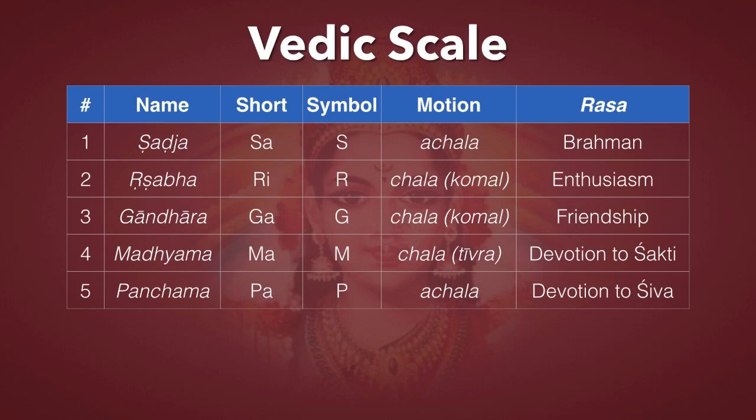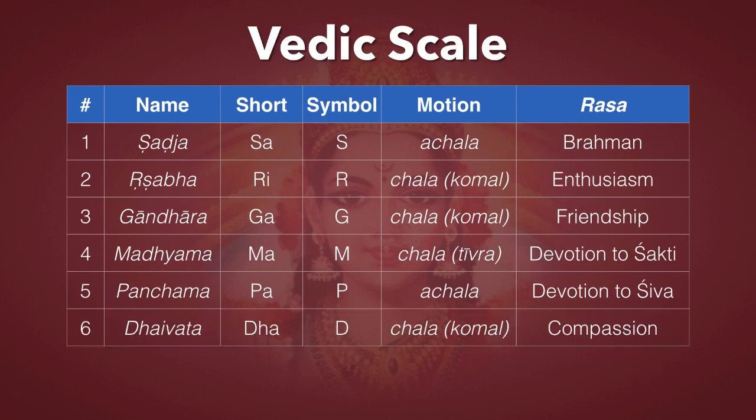The sixth is Dhaivata, or Dha. Symbol is D, and it's Chala. It can be Shuddha — natural — or Komal — flat. It expresses compassion. When it's flat, it's extreme compassion.